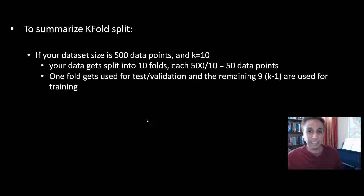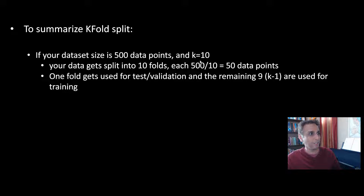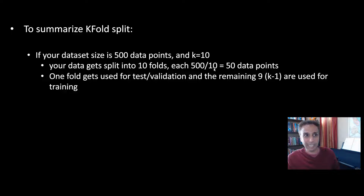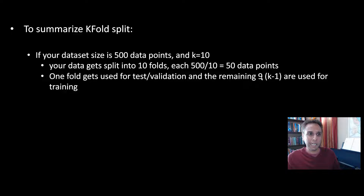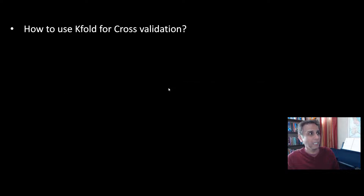To summarize K-fold: if your dataset has 500 data points and K equals 10, the data gets split into 10 folds of 50 data points each. One fold is used for testing or validation, and the remaining 9 — which is K minus 1 — are used for training.